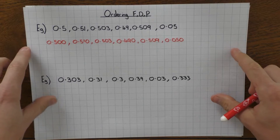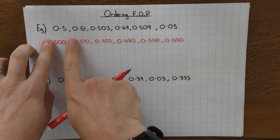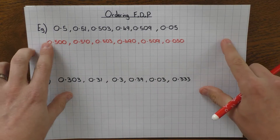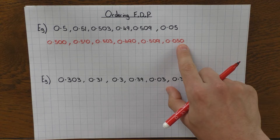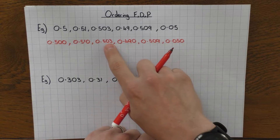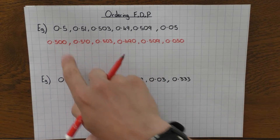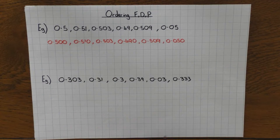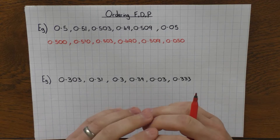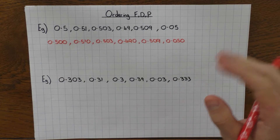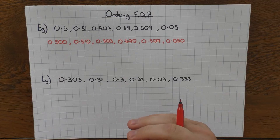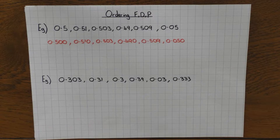So why do we do that? Well, you can essentially now ignore the '0 point' and just look at the numbers. So I've got 500, 509, 490, 503, 510, and 50. It makes it a lot easier to compare which ones are smaller and larger. Depending on the question, it might say smallest to largest or largest to smallest, so just make sure you start at whichever end you want. I'm going to go from smallest to largest as that's the most common.